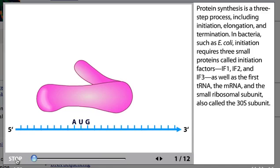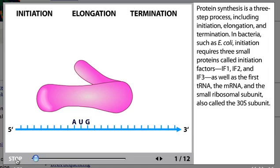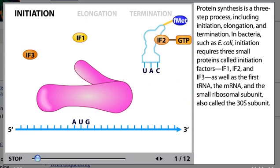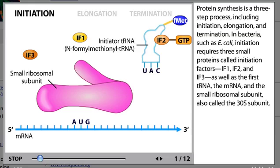Protein synthesis is a three-step process, including initiation, elongation, and termination. In bacteria such as E. coli, initiation requires three small proteins called initiation factors—IF1, IF2, and IF3—as well as the first tRNA, the mRNA, and the small ribosomal subunit, also called the 30S subunit.